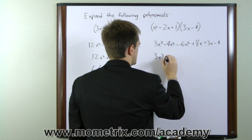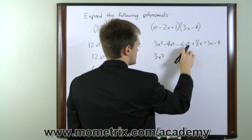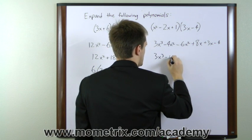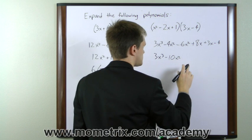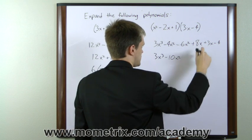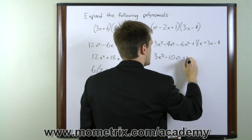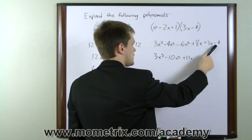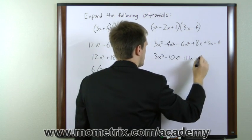We have 3x cubed minus 4x squared minus 6x squared gives us minus 10x squared plus 8x plus 3x gives us plus 11x. And we still have a minus 4.